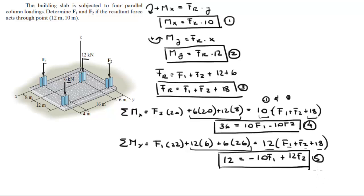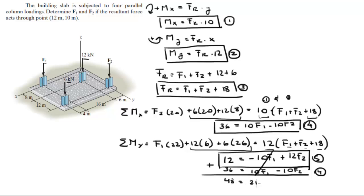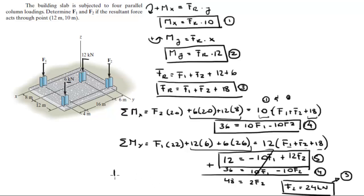Rewriting equation 4 below equation 5: 36 equals 10F1 minus 10F2. Adding equations 4 and 5 together, the F1 terms cancel out and you get 48 equals 2F2. Solving for F2: 48 divided by 2 equals 24 kN. Plugging 24 kN into equation 5 and solving for F1, you get F1 equals 27.6 kN.